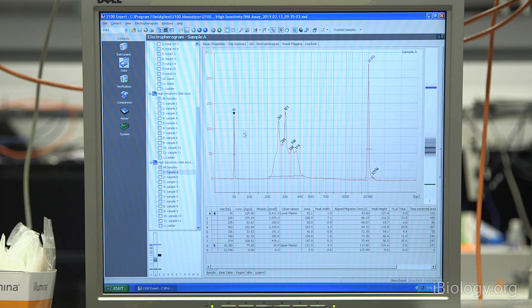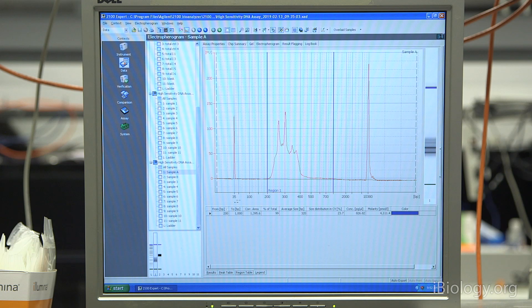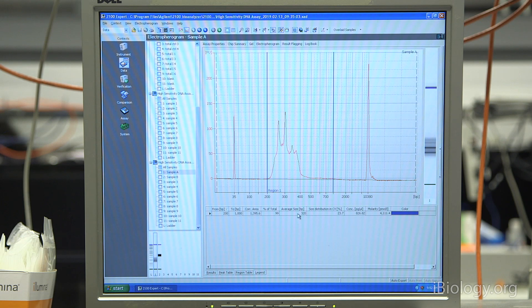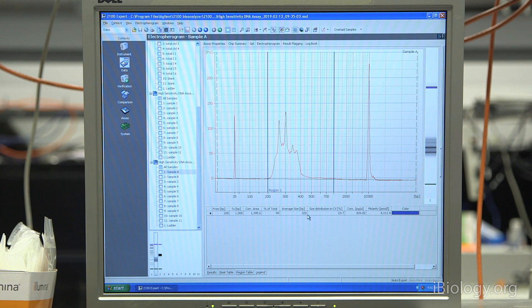Down here on the electropherogram, there are a couple of things you can do. You can set something called a region table. For next-gen sequencing libraries, you typically set these around 200 base pairs up to 1 KB. That's displayed here. What this will do is it'll analyze only the material that shows up within this range. This will give you a rough concentration in picomoles. This is a little over 4,000 picomolar concentration, or roughly 4 nanomolars. It'll also give you an average size, which is useful for some downstream QC steps. This library has an average size of 320 base pairs.